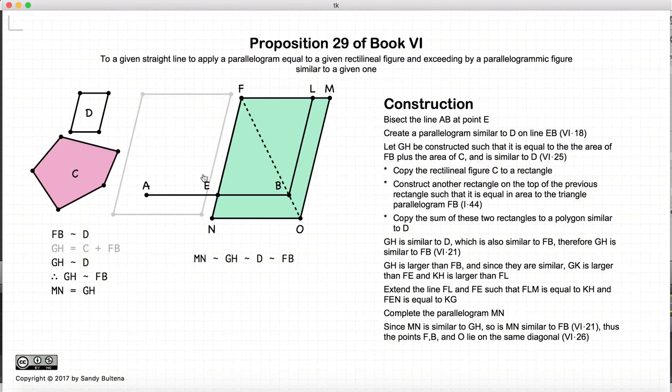Now since MN is similar to GH, which is similar to D, which is similar to FB, MN is similar to FB. So the diagonal, they share the same diagonal. So FB and O are collinear.